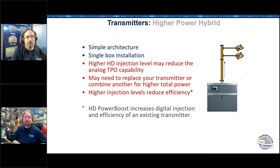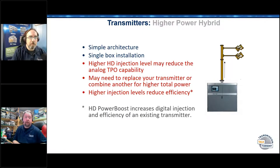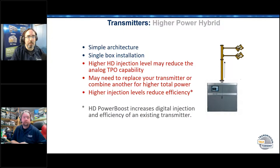These days at minus 14 dBC injection, our transmitters do better than most — not all, but most — analog tube rigs on efficiency. If you can do minus 10, which is the maximum for HD injection right now in the United States and Canada, that could mean you need a 40 kilowatt box for 22 kilowatts of analog power. You need a lot of overhead to go that high in digital. This is critical for sizing a whole bunch of things, not just the transmitter.